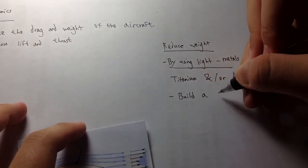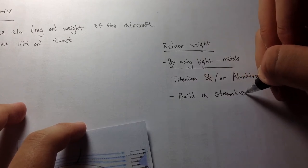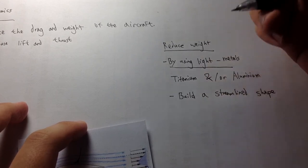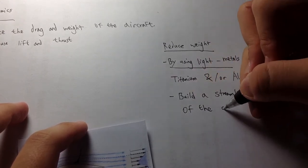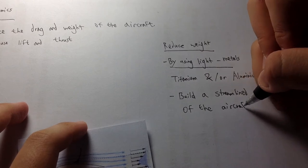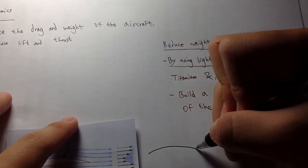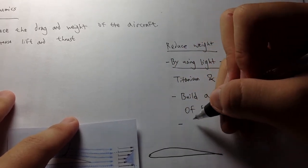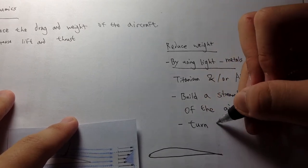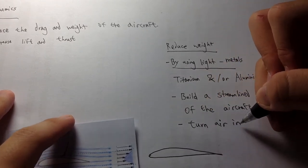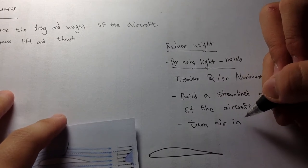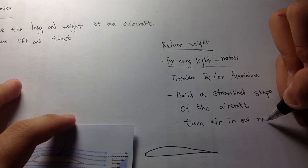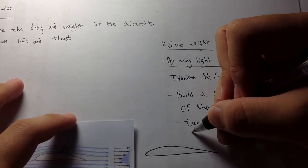Another measure is building a streamlined shape of the aircraft itself. One way to reduce air resistance is to shape the aircraft into a more aerodynamic airfoil form.